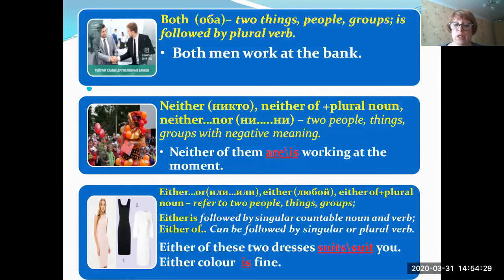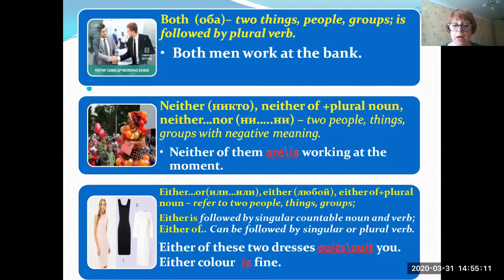The next determinant is 'either.' The expression 'either...or' means 'или...или,' and 'either' alone means 'любой' — any one of two. The phrase 'either of' is followed by a plural noun. 'Either' refers to two people, things, or groups. Pay attention: 'either' is followed by a singular countable noun and verb, but in the expression 'either of,' it can be followed by singular or plural. Examples: 'Either of these two dresses suits/suit you' and 'Either color is fine.'